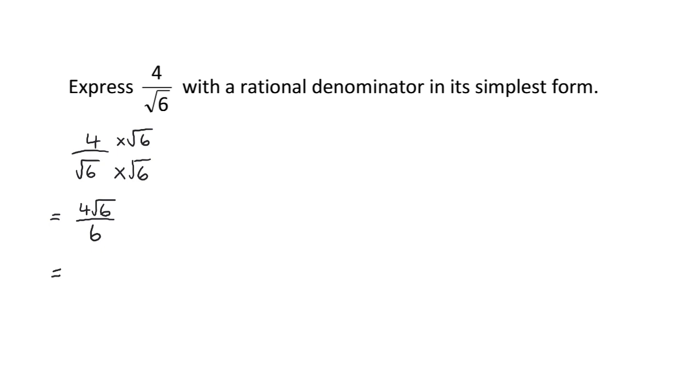The question is asking for simplest form, so I'm now looking to see if I can simplify anything. I always like to check the surd first. Can I simplify root 6? No, there's no pairs of factors of 6 that are perfect squares, so I can't do anything to that. With the whole numbers, I can divide 4 by 2 and I can divide 6 by 2. So 4 over root 6 in its simplest form is 2 root 6 over 3.